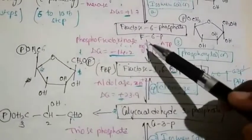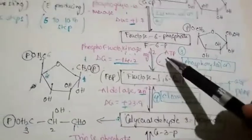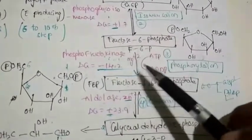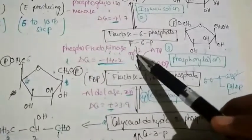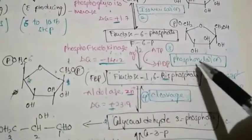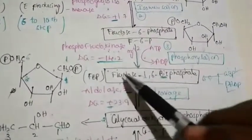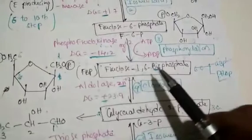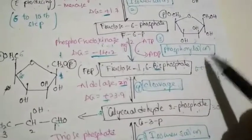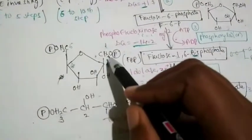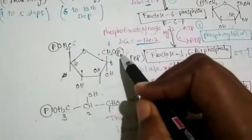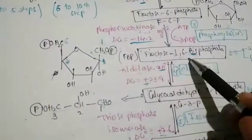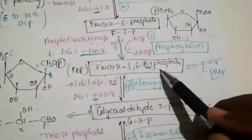The third step is the conversion of fructose-6-phosphate into fructose-1,6-bisphosphate. This is also a unidirectional reaction. The first and third steps are both unidirectional steps. The enzyme used here is phosphofructokinase, which also requires magnesium ions. This is also a phosphorylation reaction which uses ATP as energy, and it is an exergonic process. Fructose-1,6-bisphosphate is named because phosphate groups are added to both the first and sixth carbons.